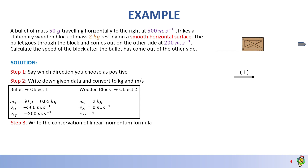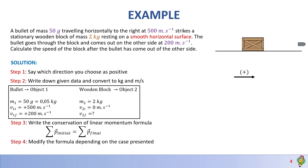Step 3: Write the conservation of linear momentum formula exactly as it appears on the formula sheet — sum of initial momenta equals sum of final momenta. Step 4: Modify the formula depending on the case presented. Here the bullet moves with its own initial velocity, the block is initially at rest, and at the final stage the bullet and block each move with their own separate final velocities.